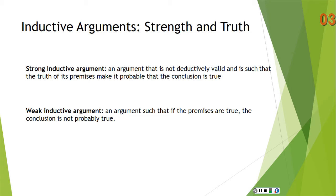The argument is also such that the truth of the premises makes it probable that the conclusion is true — meaning the probability is greater than 50-50. With a weak inductive argument, if the premises are true, the conclusion is not probably true. To be probably true is to have a probability greater than 50-50; to be not probably true is to have a probability of 50-50 or less.